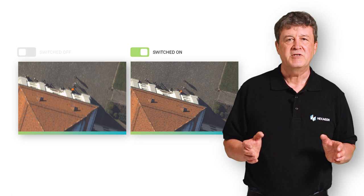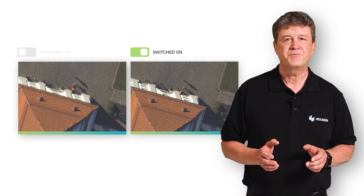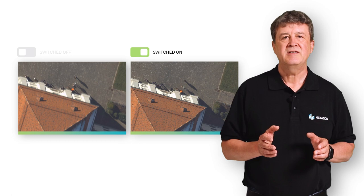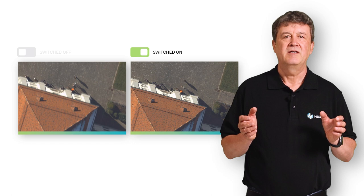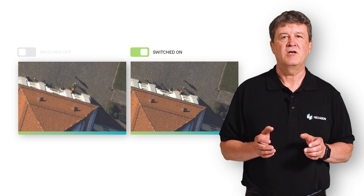This image shows the same scene with FMC switched off on the left and switched on on the right. You can clearly see the impact of mechanical FMC on image blur. The image was captured at a very low sun angle, which you can see based on the long shadows.